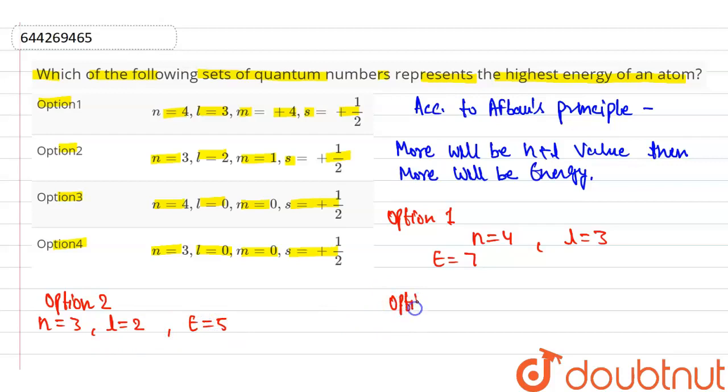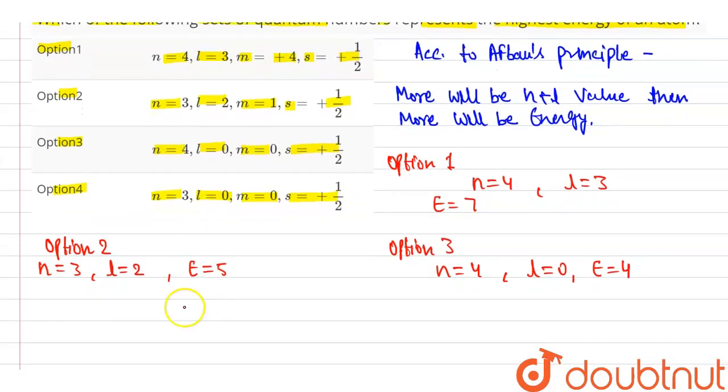Now we are talking option number third. Here the value of n is 4 and the value of l is 0, so the energy becomes 4. Now we are talking about option number 4. Here the value of n is 3 and the value of l is 0, so the energy becomes 3.